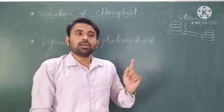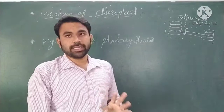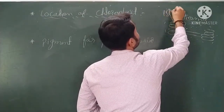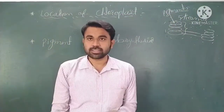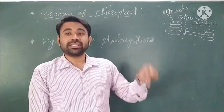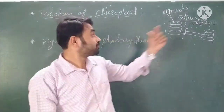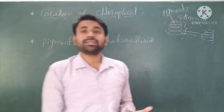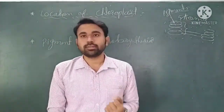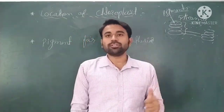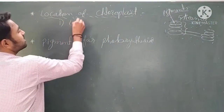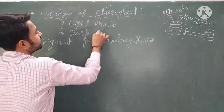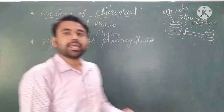Grana is made up of units called thylakoids, and the thylakoids contain different photosynthetic pigments — the pigments that carry out photosynthesis. These pigments absorb photons from sunlight. Photosynthesis has two phases: the first phase is the light phase and the second is the dark phase.